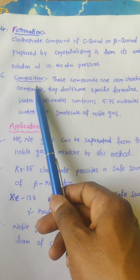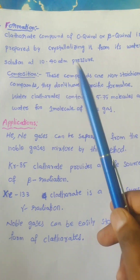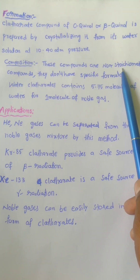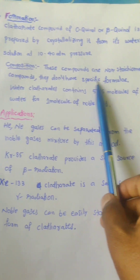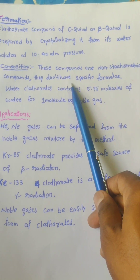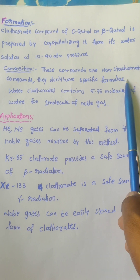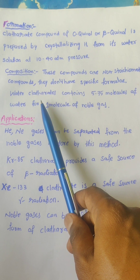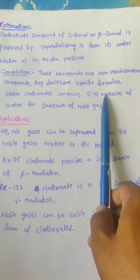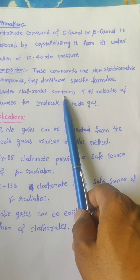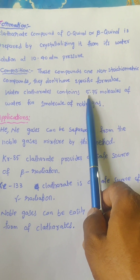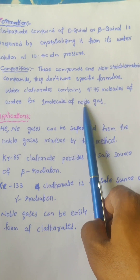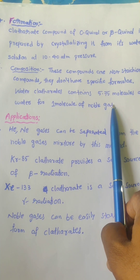The fifth point is the composition. These clathrate compounds are generally non-stoichiometric compounds, meaning they do not have any specific formula. The composition of the water clathrates is given here. Generally, water clathrates contain 5.75 water molecules for one molecule of the noble gas.